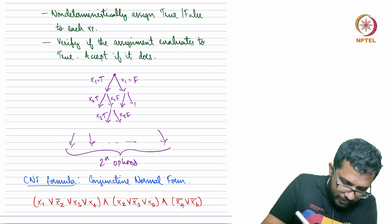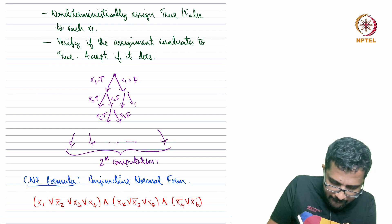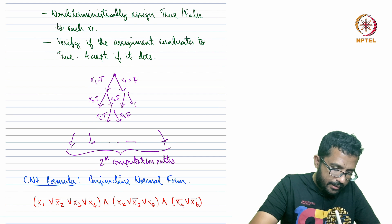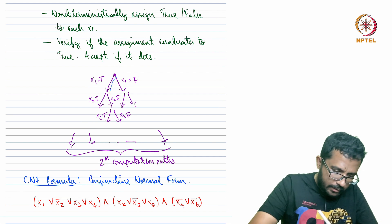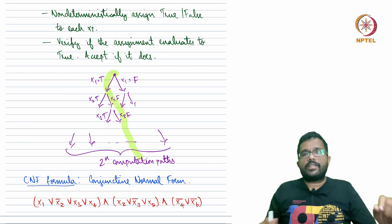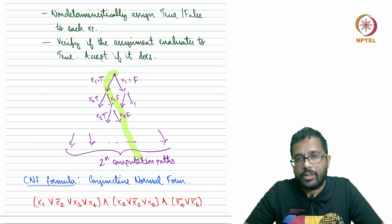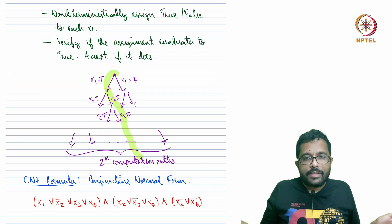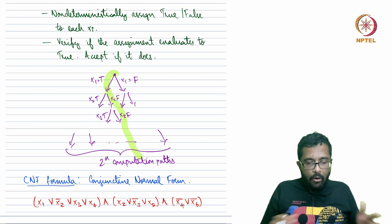For each computation path, which corresponds to a certain assignment of variables, we check whether that assignment satisfies the formula. If it satisfies, we accept; if not, we reject. If there is a satisfying assignment, it is one of the 2^n paths and leads to acceptance. If the formula is not satisfiable, all paths will reject.